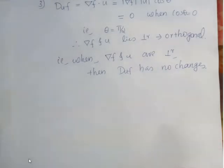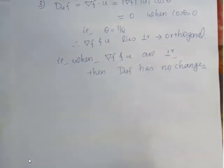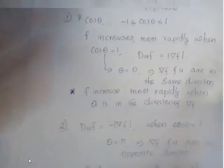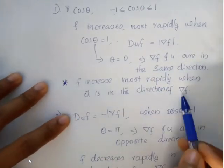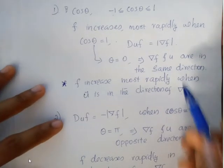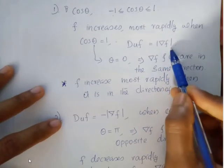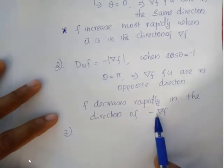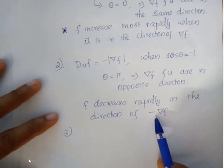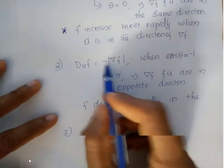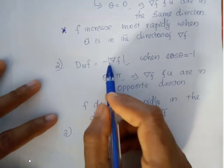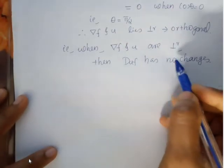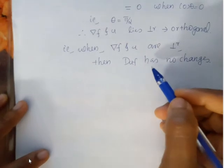These are the important properties of the directional derivative D_u f. First: f increases most rapidly when u is in the direction of ∇f, and the maximum value is |∇f|. Second: f decreases most rapidly in the direction of -∇f, and the minimum value is -|∇f|. Third: when ∇f and u are orthogonal, there is no directional derivative change.